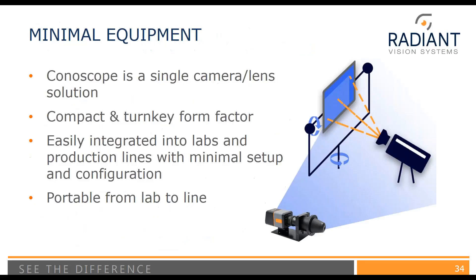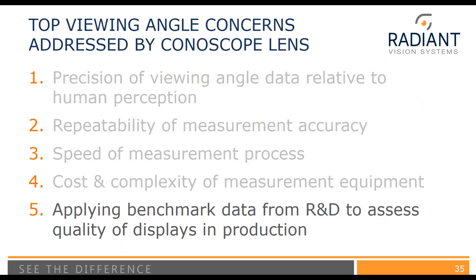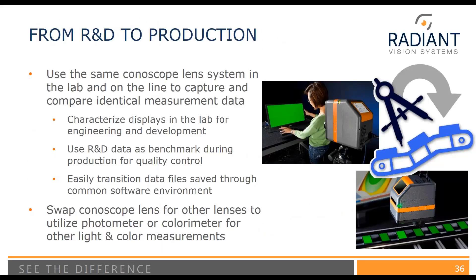If you're concerned about cost and complexity, the Conoscope is a single camera, single lens solution in a compact and turnkey form factor. It can be easily integrated into labs and production lines with minimal setup and configuration. It's portable from lab to line, so you can use the same setup in your R&D environment as you would in production. That allows you to use the same Conoscope lens system in the lab and on the production line to capture identical measurement data — characterizing displays for engineering and development, using R&D data as a benchmark during production, and transitioning data files using common software. You can also swap the Conoscope lens with other lenses to utilize the photometer and colorimeter for other light and color measurements.